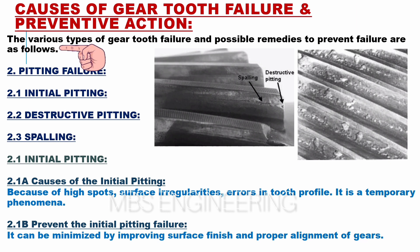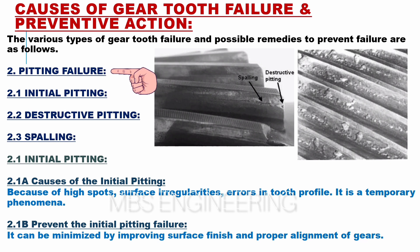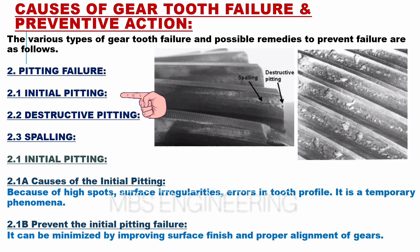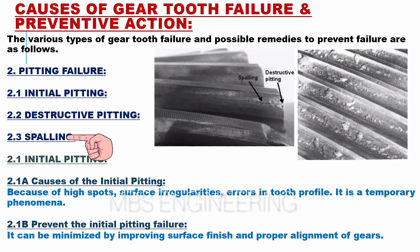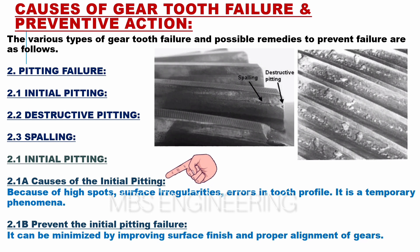The second cause of gear tooth failure is pitting. There are three types of pitting: initial pitting, destructive pitting, and spalling. The main causes of initial pitting are high spots, surface irregularities, and errors in tooth profile. It is a temporary phenomenon.